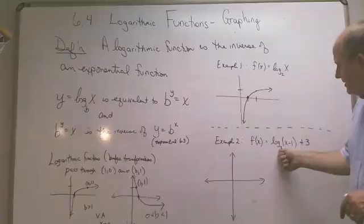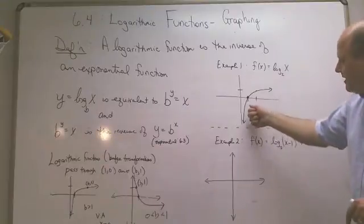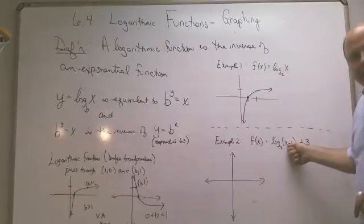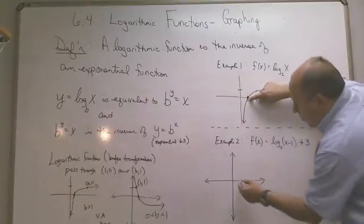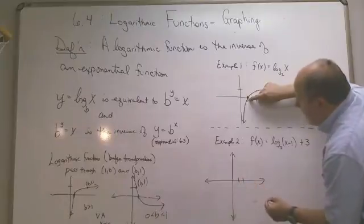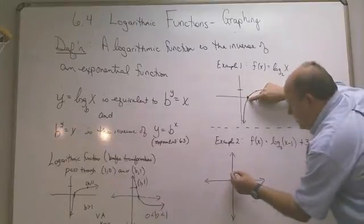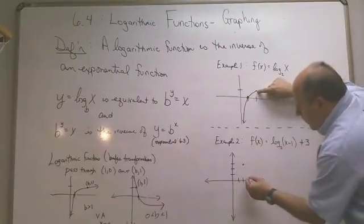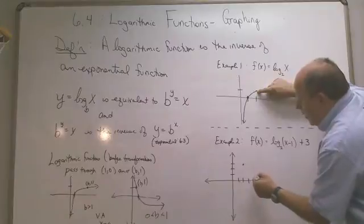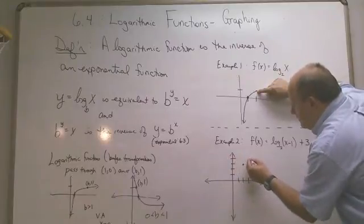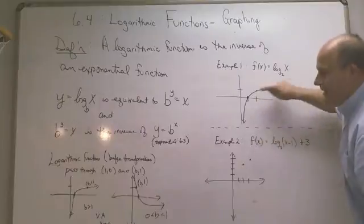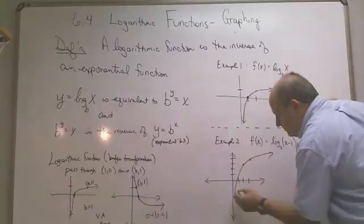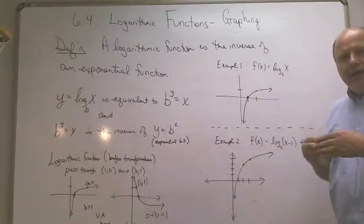Example 2 has the same log base 2. It's going to have the same shape, except that this is going to get shifted 1 unit to the right and then up 3. So this point right here is going to go 1 unit to the right, that's at 2, and then up 3. So it goes there. And this point at (2, 1) will go right 1 and up 3. But it has that same backward 7 shape. The graph gets moved 1 unit to the right and 3 up.